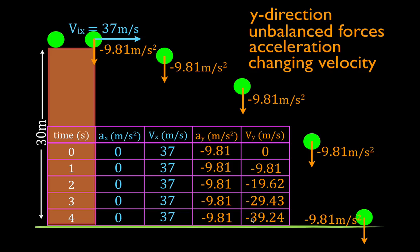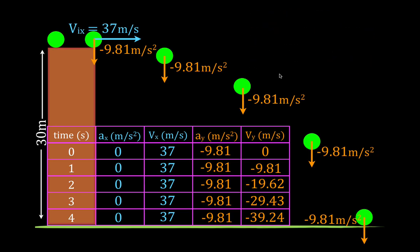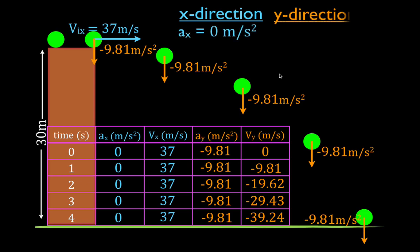You can see that is the motion of the object in the x and the y direction. You need to think of them separately. In the x direction: balanced forces, constant velocity, no acceleration. In the y direction: unbalanced forces, changing velocity, and therefore acceleration, with the acceleration in the y direction being minus 9.81 meters per second squared. Please remember the motion in the x direction and the motion in the y direction are separate from each other — in one case we have balanced forces and no acceleration, and in the other unbalanced forces and acceleration.